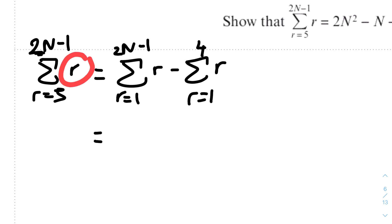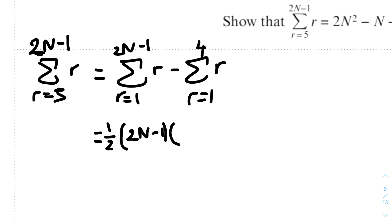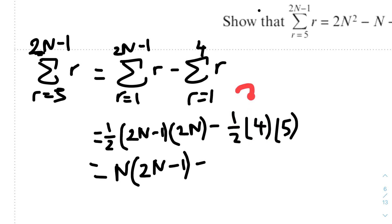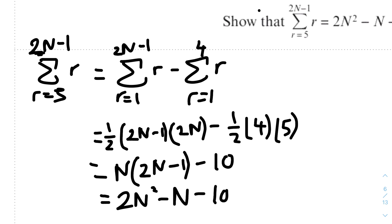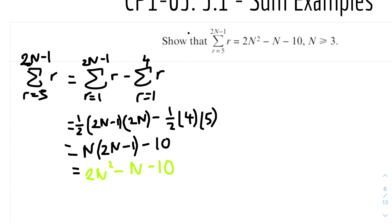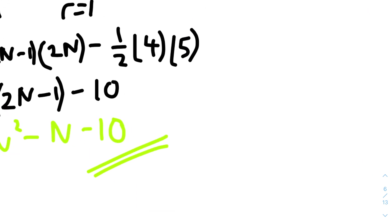We know that the sum of r is ½n(n+1). So the first part gives ½(2n−1)(2n−1+1) = ½(2n−1)(2n), and the second part gives ½(4)(5). Simplifying: the 2 cancels with the half, leaving n(2n−1), minus the second term where 4 cancels with the half to give 2×5 = 10. Therefore we get 2n²−n−10, which is exactly what we needed to show. QED.